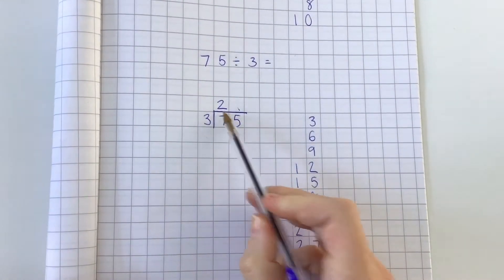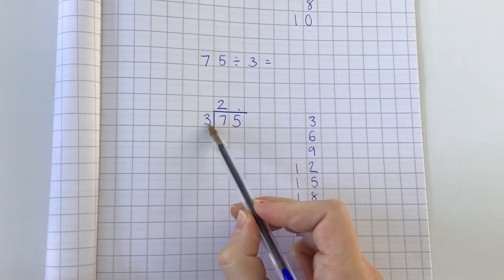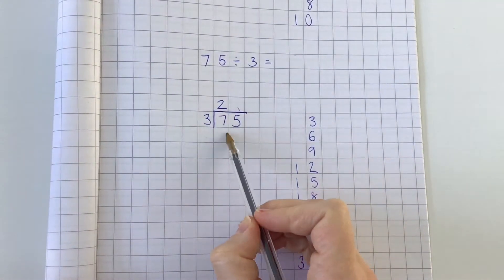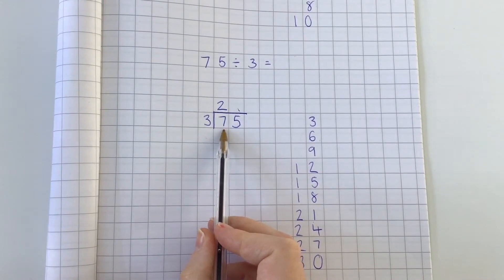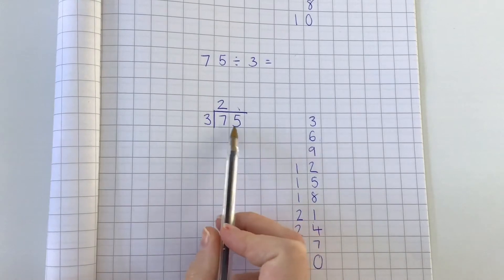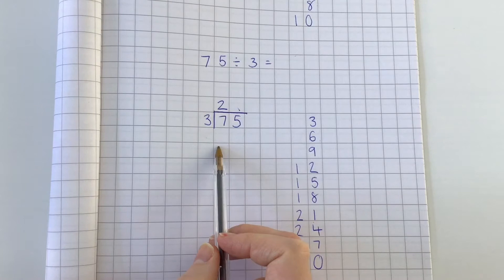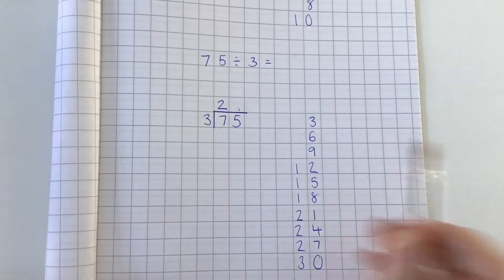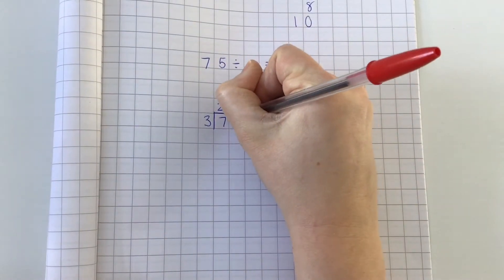3 times 2 is 6, and I wanted to see how many times 3 goes into 7, so there is a remainder. 3 times 2 is 6 — what do we add to 6 to get to 7? We add 1. So 6 plus 1 equals 7, meaning 1 is our remainder. Because I have a remainder of 1, I need to carry that remainder over to the next number, which is 5.